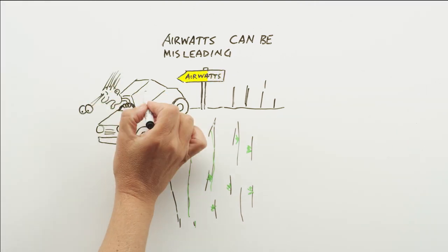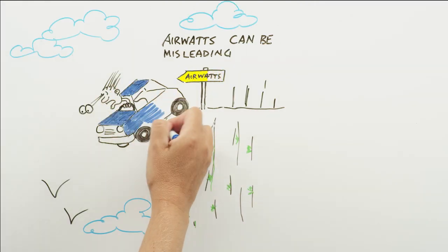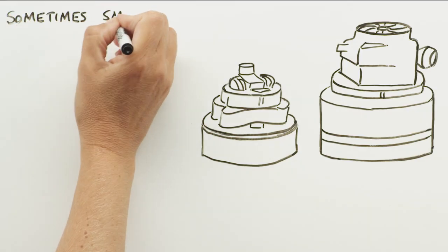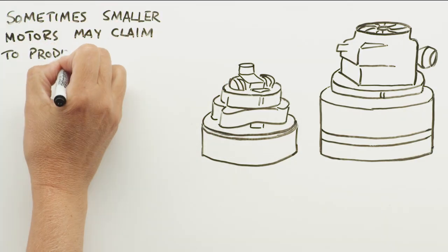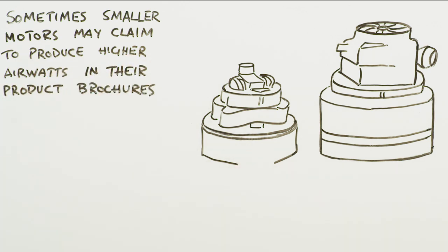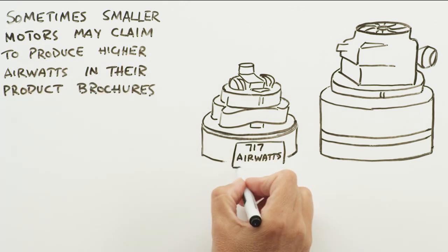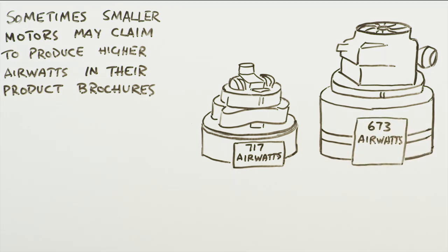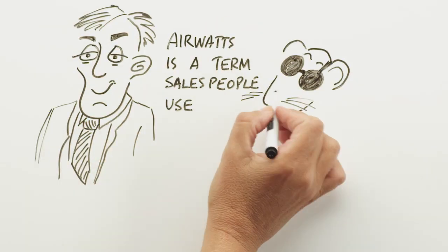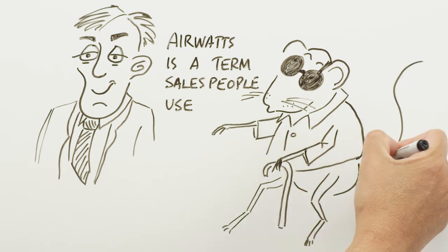However, airwatt measurements can be misleading. Sometimes smaller motors may claim to produce higher airwatt in their product brochures, but brochure airwatt are measured at the motor and not at the end of the hose. This measurement has nothing to do with vacuum cleaner performance. Simply put, airwatt is a term salespeople use to blind customers.